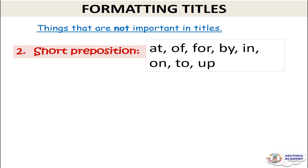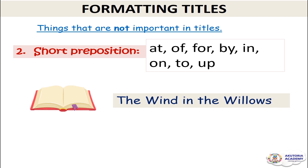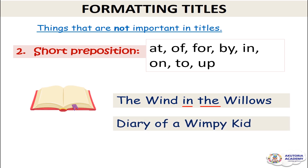You don't capitalize articles except they begin the title. The second are short prepositions like 'at,' 'of,' 'for,' 'by,' 'in,' 'on,' 'to,' 'up' — you don't capitalize short prepositions in book titles. For 'The Wind in the Willows,' 'The' is the first word and 'Willows' is the last. 'Wind' is an important word you capitalize, but 'in' is a short preposition and 'the' is an article — neither is capitalized.